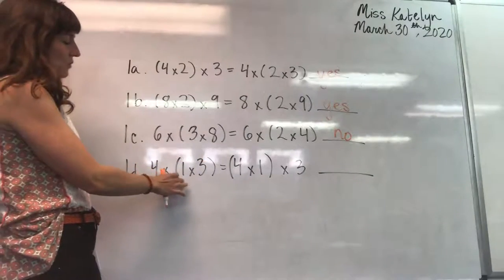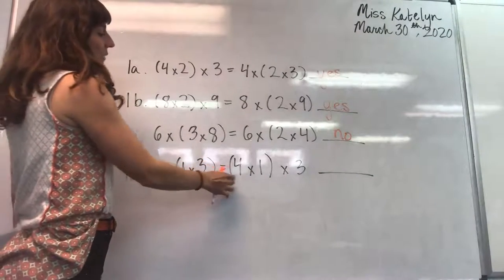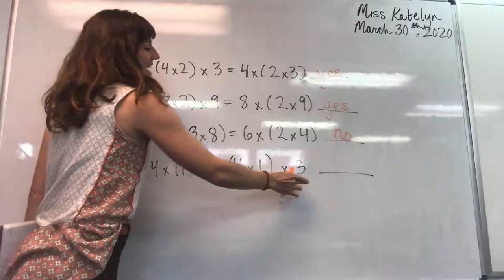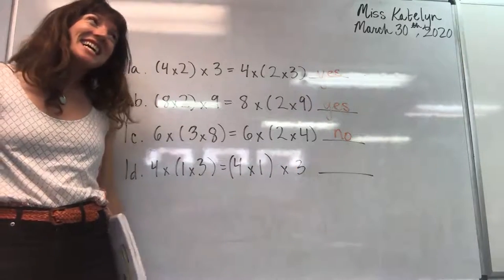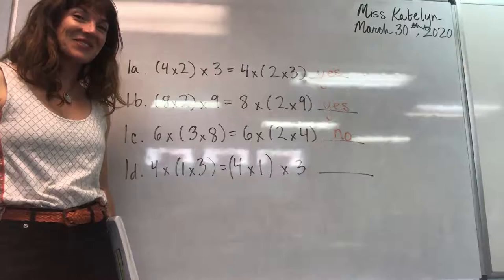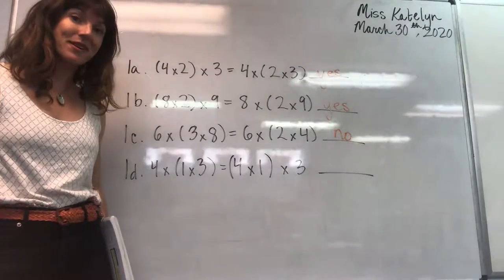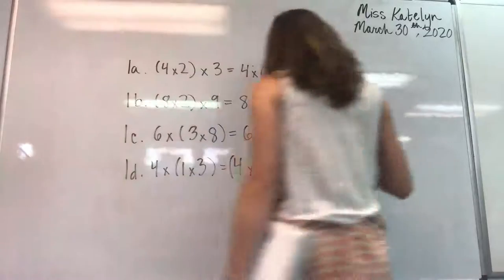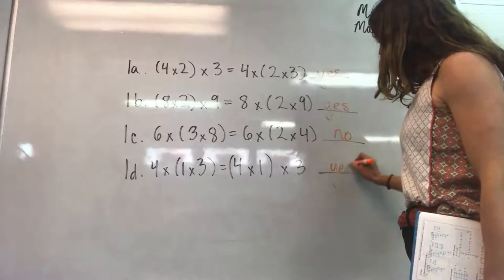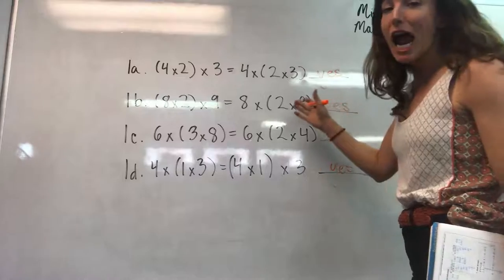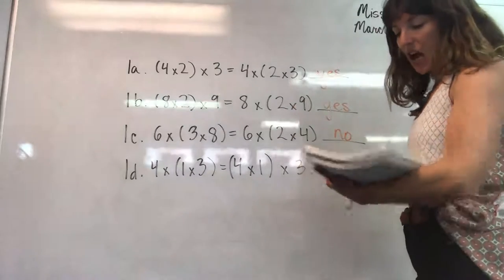And four times one times three equals four times one times three. Oh my gosh. We have the same numbers on both sides. So yes, we are going to have the same answer.